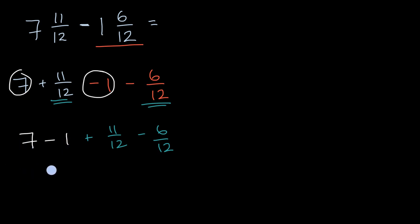And so seven minus one is six. So it's going to be six plus, now if I have 11 of something, in this case twelfths, and I'm subtracting six of them away, I'm going to be left with five of those somethings, five twelfths. So it's going to be six plus five twelfths, which is the same thing as six and five twelfths.